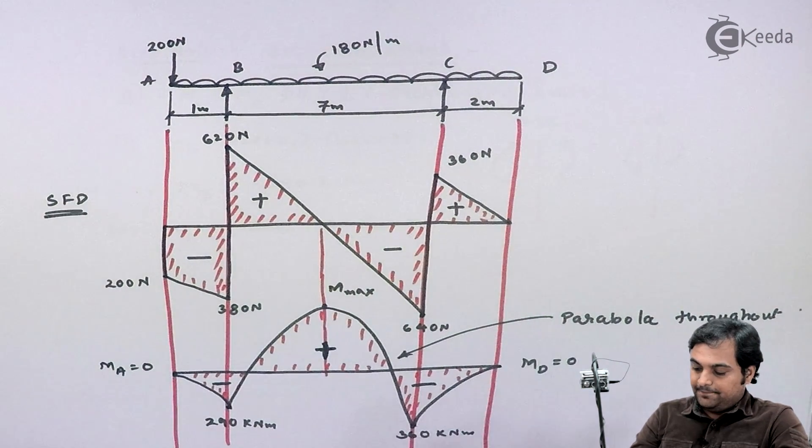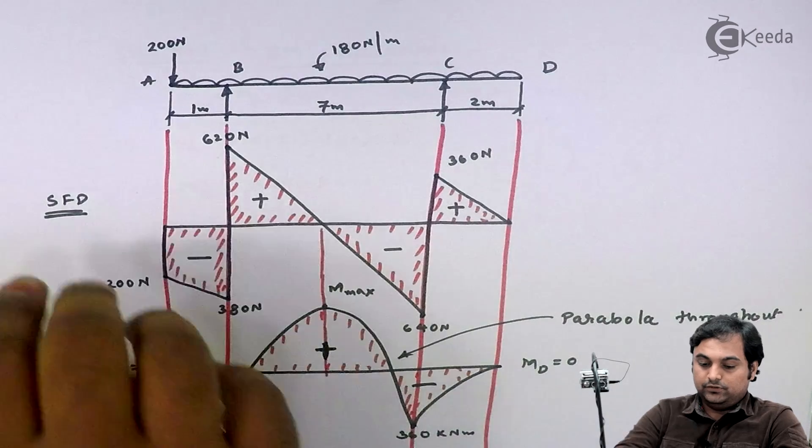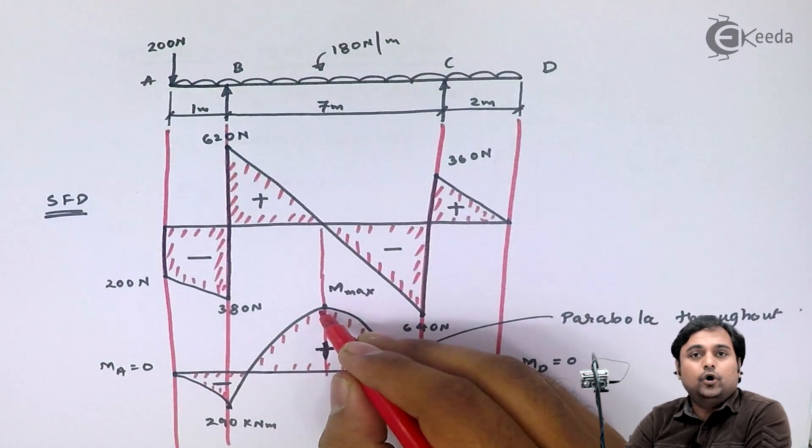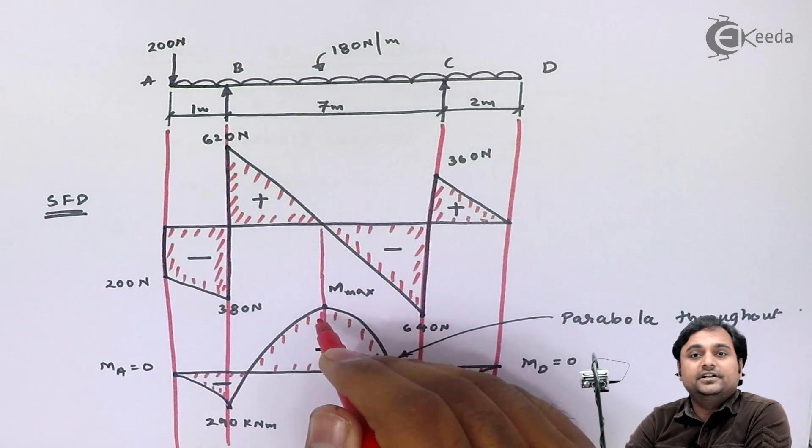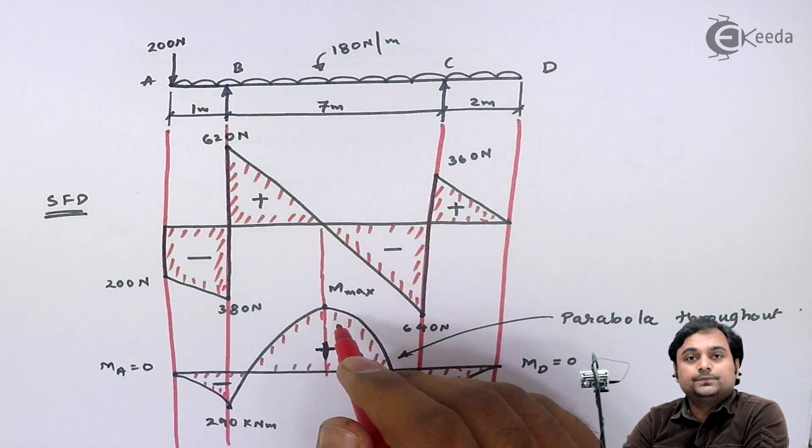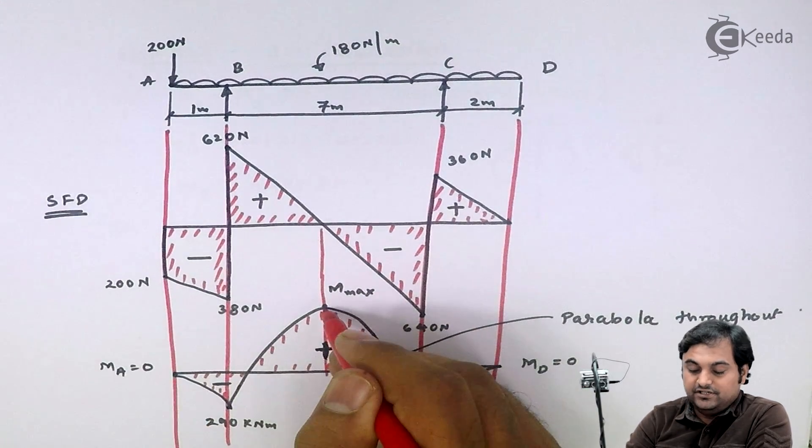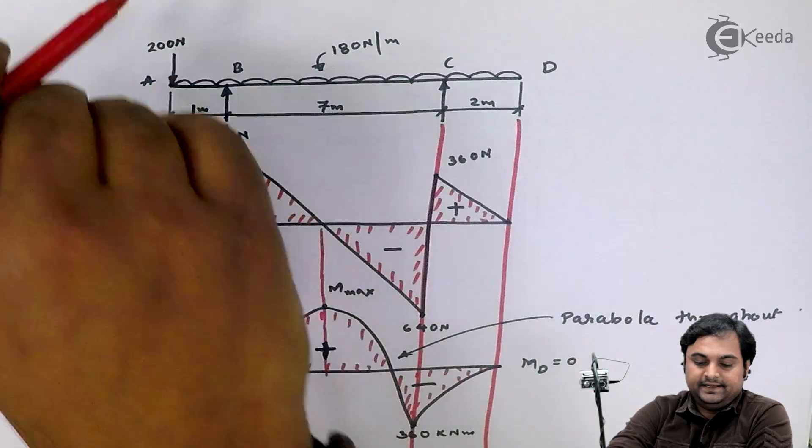Here I have the bending moment diagram where I am getting parabola throughout. As we can see, there is one point on the bending moment where I am getting maximum value. I need to know this value. First of all, I need to know at what distance this maximum bending moment would be acting.